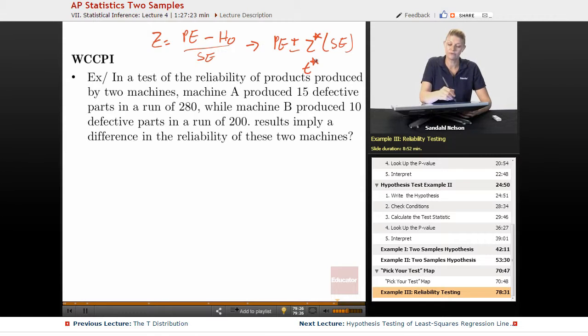Okay, so let's review this using this example, because there is one difference you have to keep in mind. In a test of the reliability of products produced by two machines, machine A produces 15 defective parts in a run of 280, and machine B produces 10 defective parts in a run of 200. Do results imply a difference in the reliability of these two machines?